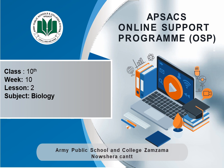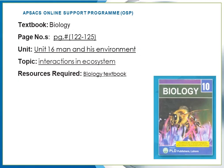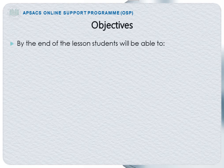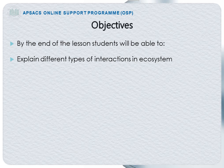Assalamu alaikum, welcome to F6 online support program. This is week 10 and lesson 2. Textbook biology page 122 up to 125, unit 16 — Man and His Environment — and the topic is Interaction in Ecosystem. By the end of the lesson, you will be able to explain different types of interactions in ecosystem and examples of different interactions.